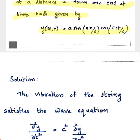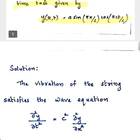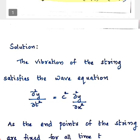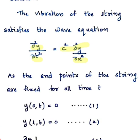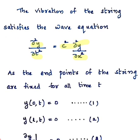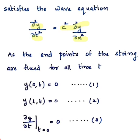Now we know that vibration of a stressed string will satisfy the wave equation, which is given by ∂²y/∂t² equal to c² ∂²y/∂x². Since the endpoints are fixed, we have the condition y(0,t) equal to zero — that is, displacement at the initial point is equal to zero for all time — and y(L,t), that is when x equal to L, that is the endpoint, will also be equal to zero for any time t.